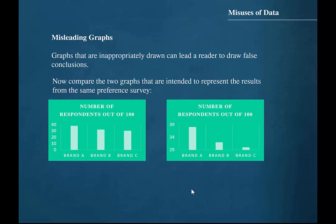Now compare the two graphs that are intended to represent the results from the same preference survey. Note that in the graph on the right, the y-axis starts at 29 rather than 0, as with the graph on the left.